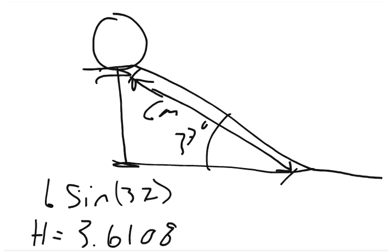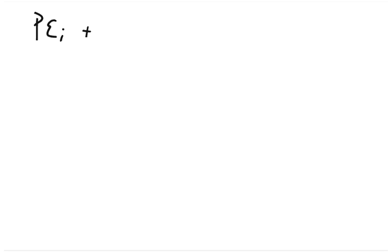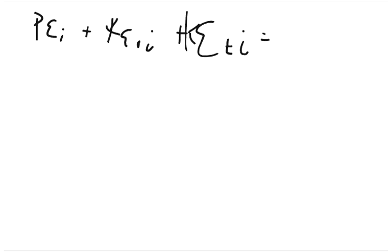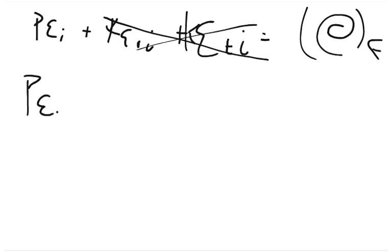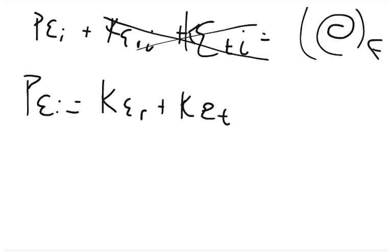3.6108 is going to be the height. So now we can use conservation of energy: potential energy initial plus kinetic energy rotational initial plus kinetic energy translational initial equals all of these final terms. At the very beginning, the kinetic terms are both zero. The potential energy in the final state is also zero, so PE initial equals KE rotational final plus KE translational final.